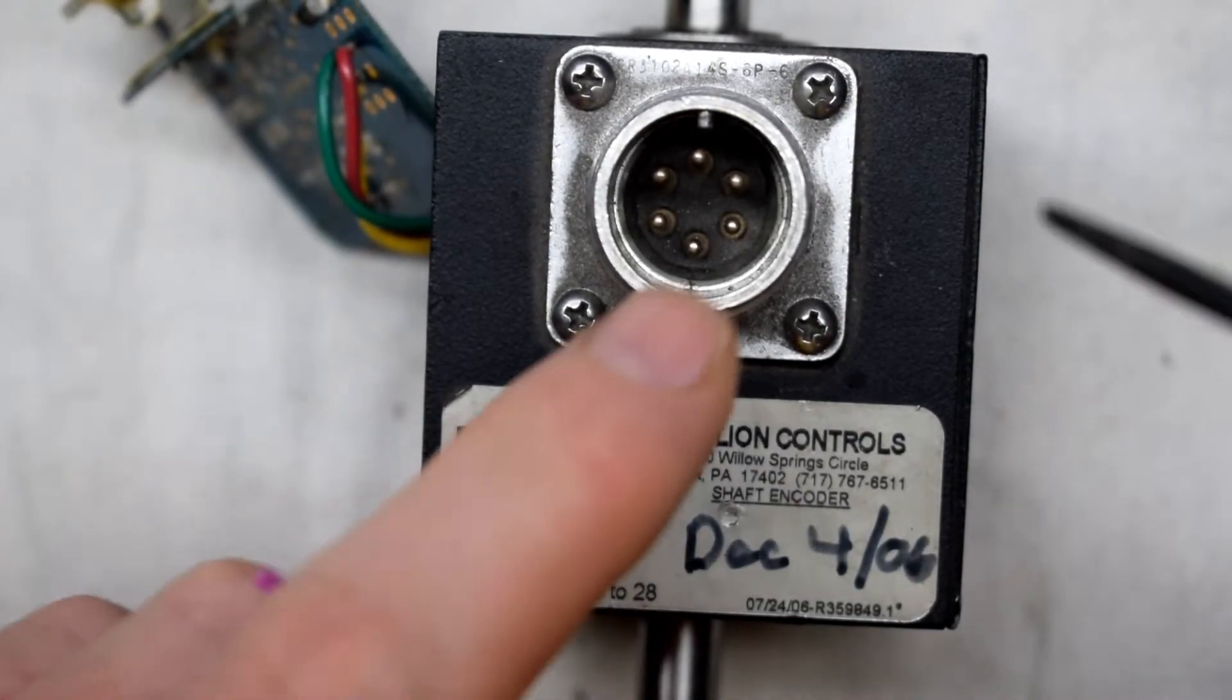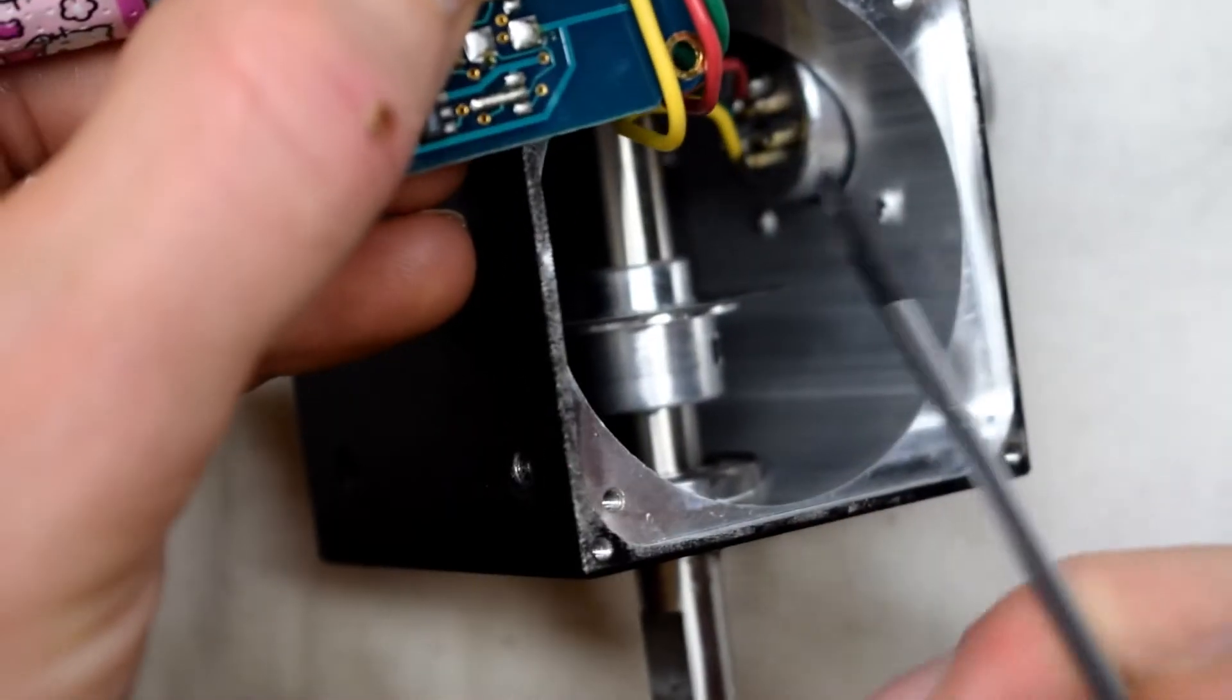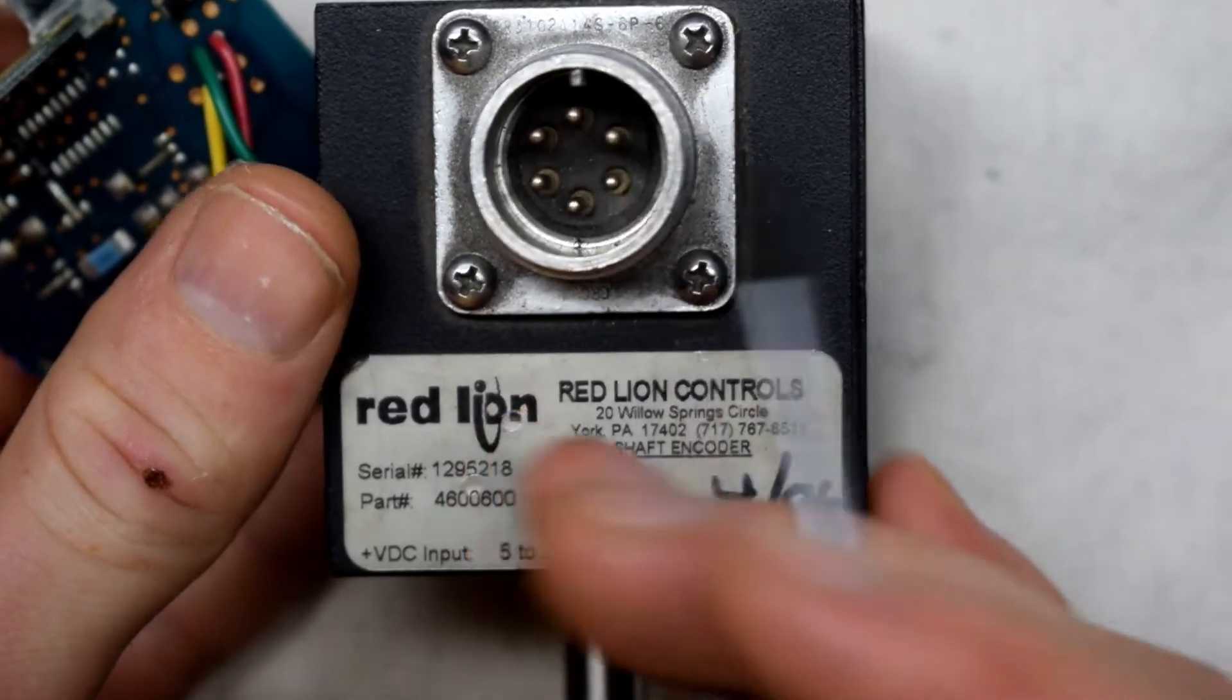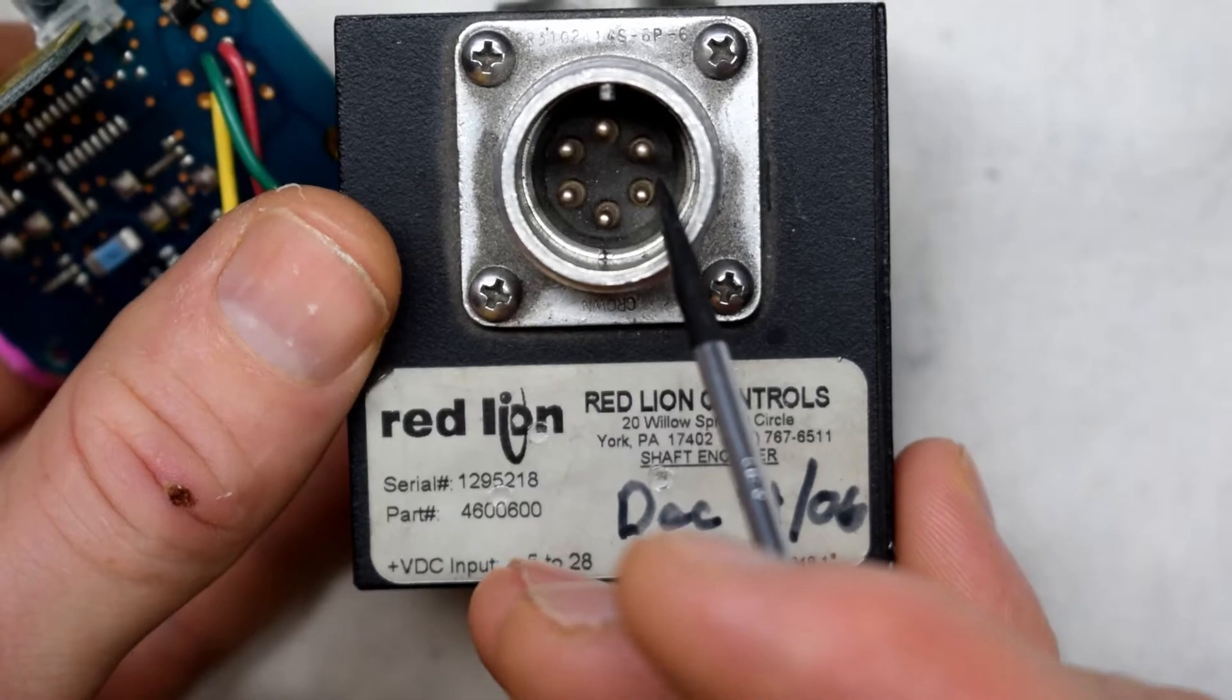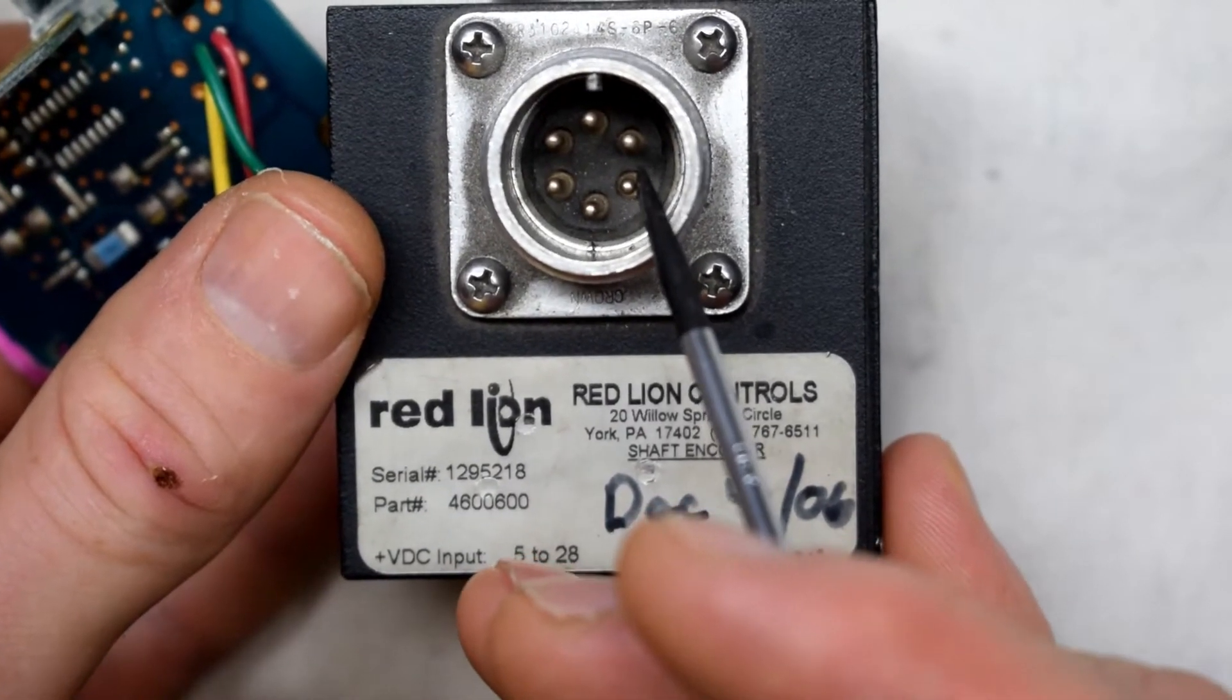So the correct pinout... the little groove is at the top here. The red wire is this. So this is positive VCC. Then it goes ground. And the third one to the right here is the data pin.